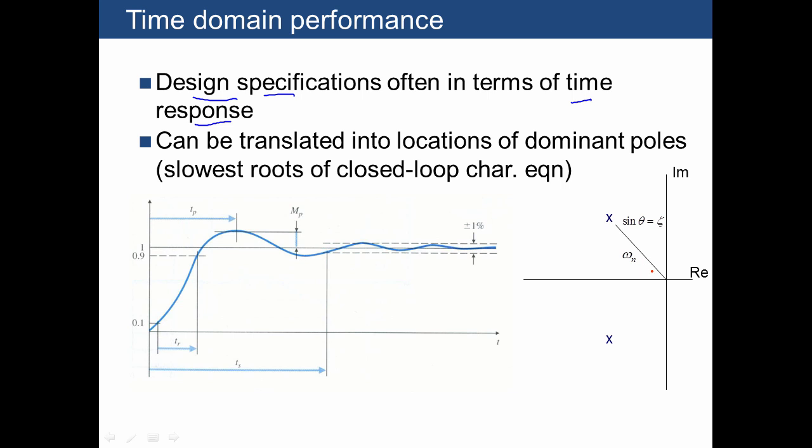We're trying to decide on locations for the denominator's characteristic roots, or poles, in the complex plane, typically in terms of zeta and omega n. So here we're going to talk about how to translate between performance measures in time.